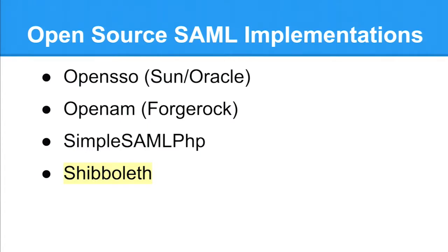Here are some popular open source SAML implementations. OpenSSO, which is now owned by Oracle. OpenAM, which is a fork of OpenSSO owned by ForgeRock - it claims to be open source in that the source code is available, but you still have to compile the Java code into classes. It's a bit like Red Hat Enterprise Linux where it's open source but you kind of have to run CentOS to get an open source version. Another one is SimpleSAMLphp, which I wasn't aware of when we decided to go down the Shibboleth path. And of course, Shibboleth.